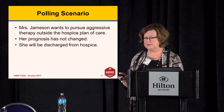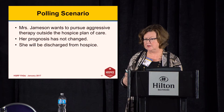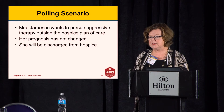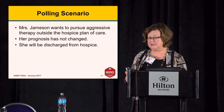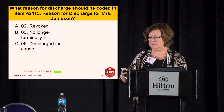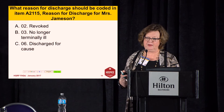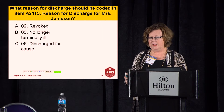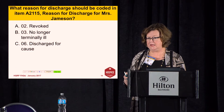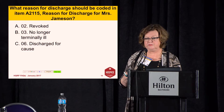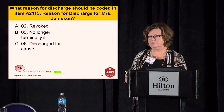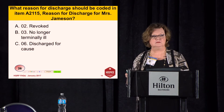Here's a polling scenario. Mrs. Jameson wants to pursue aggressive therapy outside the hospice plan of care. Her prognosis has not changed and she will be discharged from hospice. What reason for discharge should be coded in Item A2115, the reason for discharge for Mrs. Jameson? A — revoked? B — 03, no longer terminally ill? Or C — 06, discharge for cause?